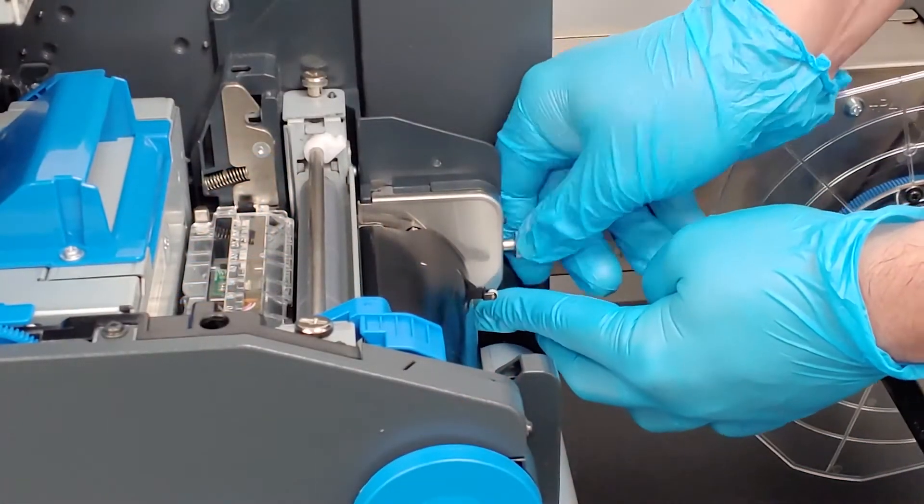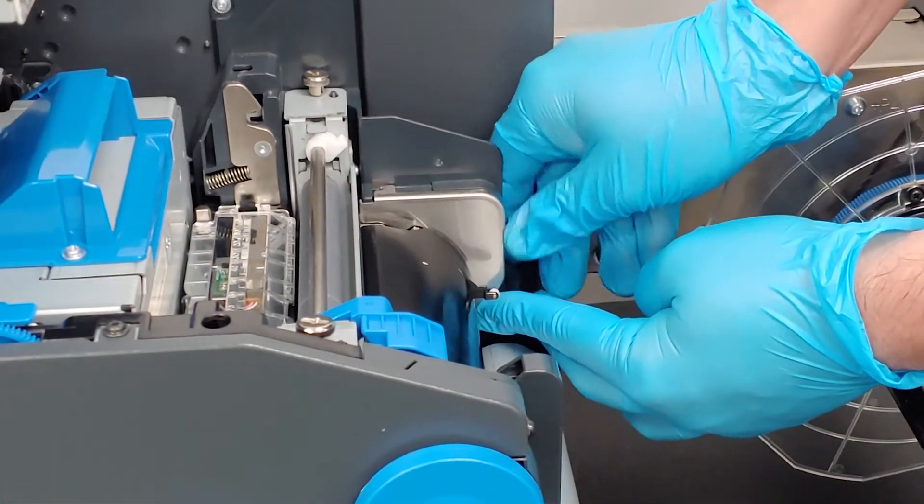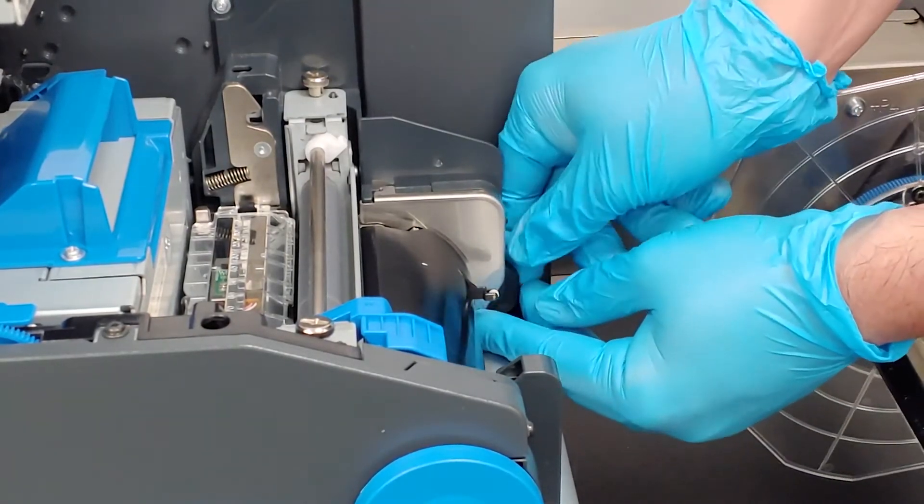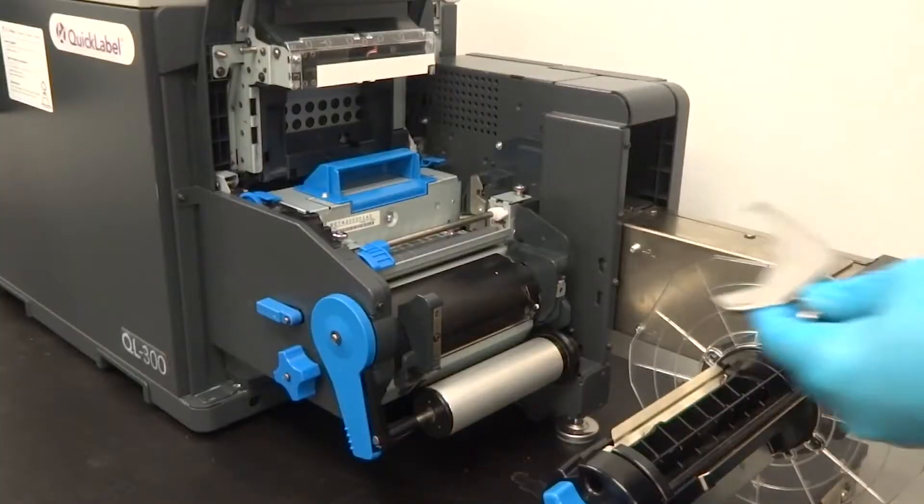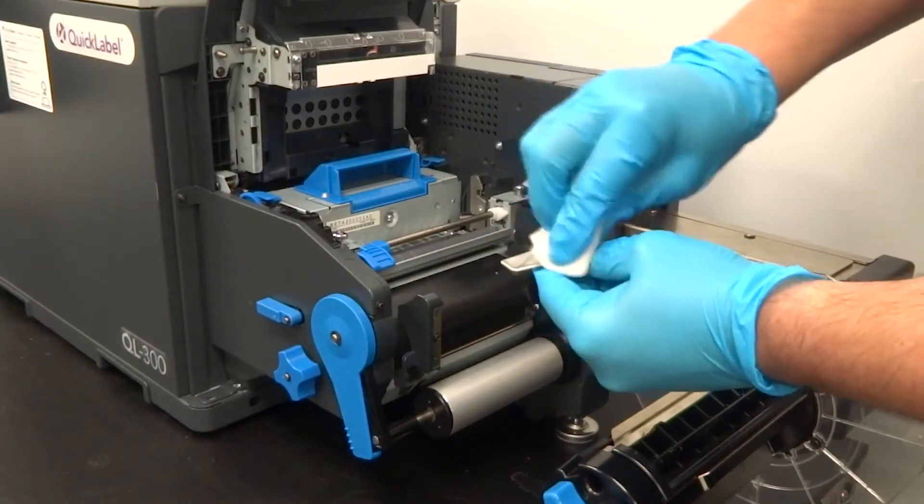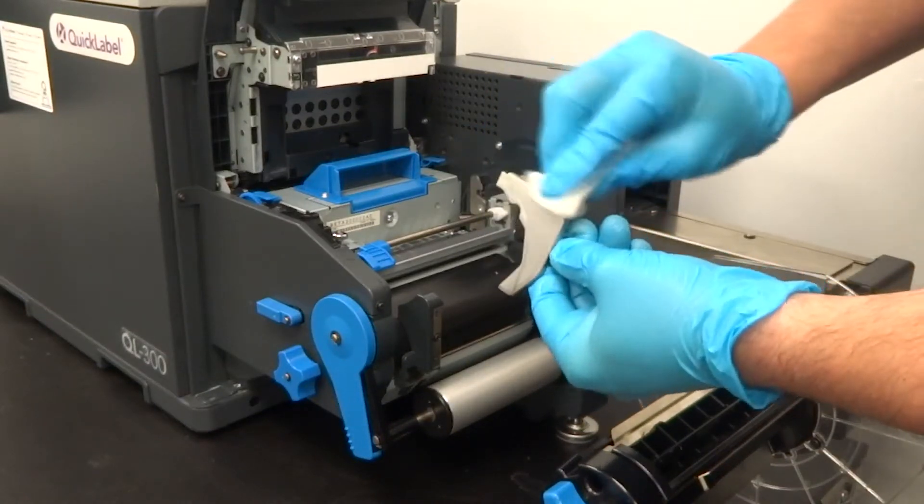Next, remove the inside metal paper guide by turning the locking screw counter-clockwise. Wipe the surface to remove any accumulated adhesive or dust.